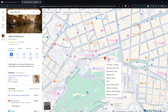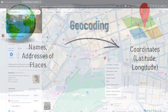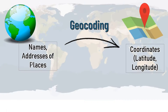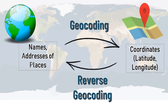Geocoding is basically the process of converting names of places or addresses into latitude and longitude coordinates. The reverse process of that — if you have a bunch of different latitude and longitude information and you convert it back into names of places or addresses — that's called reverse geocoding.